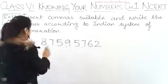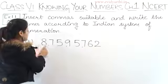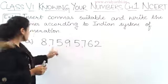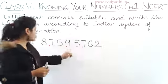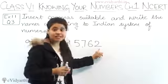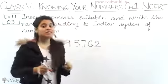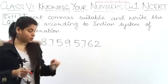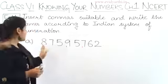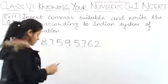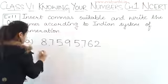The most important thing is 8. So for 8, let's count: one, two, three, four, five, six, seven digits - seven zeros - which means crore. So this will become 8 crore. Let's write it down.